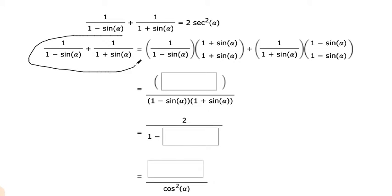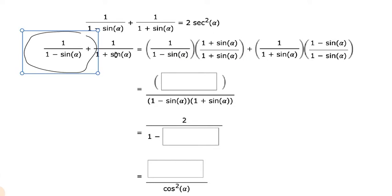Okay, so they start with the left side. And what they're doing is they're multiplying this fraction by 1 plus sine alpha over 1 plus sine alpha. So they're multiplying this whole thing by the opposite fraction's denominator. And then this other fraction, they're multiplying the top and the bottom by 1 minus sine theta. So they did that step for us. And they can do that, right, because this is 1 and this is 1. So you're not really changing the problem. It's still the same item.